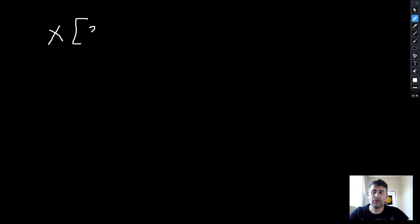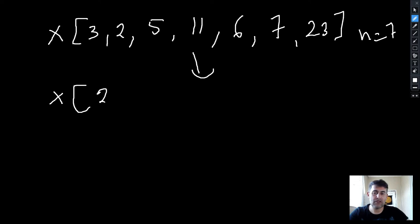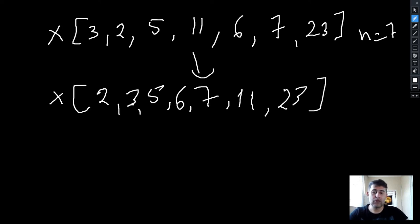Let's look at an example. We have data x with 7 numbers. This is an odd count, so first we rank them from smallest to largest. After sorting, we apply: n plus 1 divided by 2 equals 7 plus 1 divided by 2, which equals 4. So we find the 4th value in the sorted data, and that is our median — in this case it is 6.